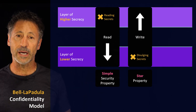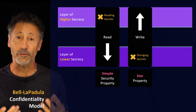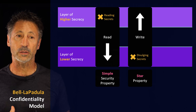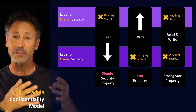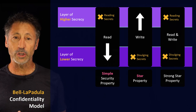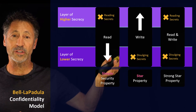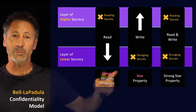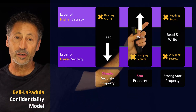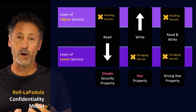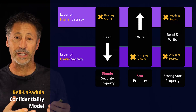So writing up is allowed, but writing down is not. That's the second rule of Bell-LaPadula, referred to as the star property of the confidentiality, lattice-based model. The third rule combines the first two. If you have the ability to both read and write, the simple security property only allows reading down and the star property only allows writing up. Combining those — which is what the strong star property is about — means you can only do things at your own layer: nothing higher, nothing lower.